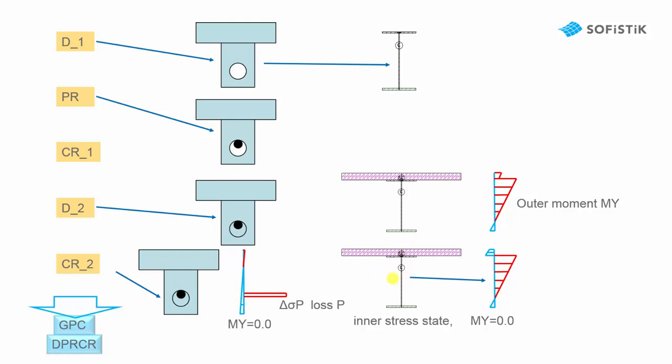Creep and shrinkage is very important because maybe the shrinkage of the concrete deck slab will get a tension in the concrete, but will also produce simultaneously a compression in the steel.